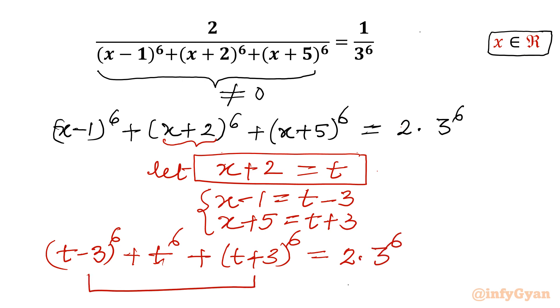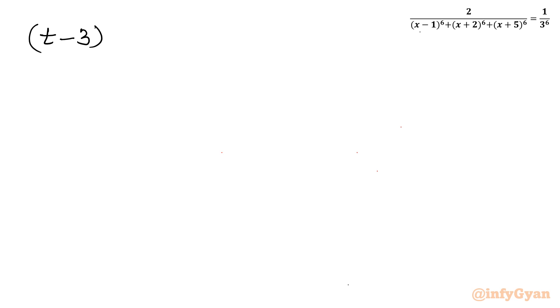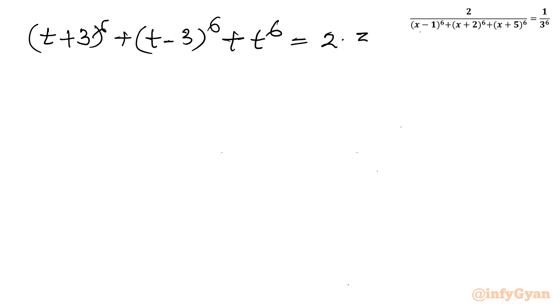Now my target is to resolve (t minus 3) whole power 6 and (t plus 3) whole power 6. So let us simplify using Pascal's triangle first. I will write our equation first as (t plus 3) whole power 6 plus (t minus 3) whole power 6, then add t raised to the power 6. The right hand side is 2 times 3 raised to the power 6.